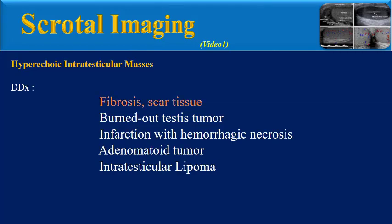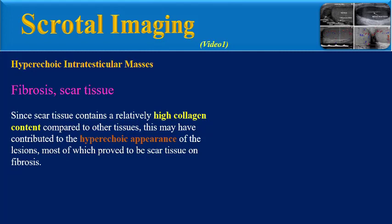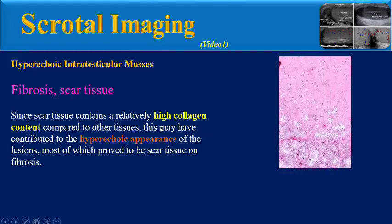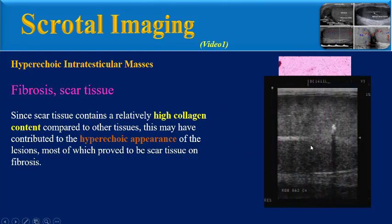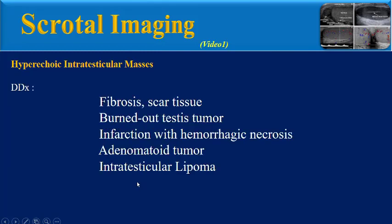The first entity is fibrosis. Since scar tissue contains relatively high collagen content compared to other tissues, this may contribute to the hyperechoic appearance of these lesions, most of which prove to be scar tissue or fibrosis.